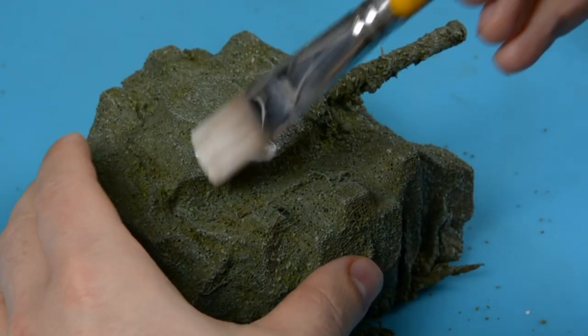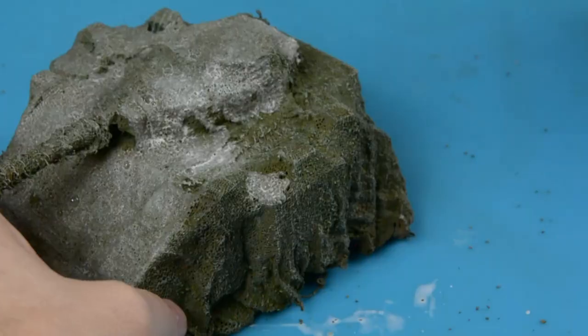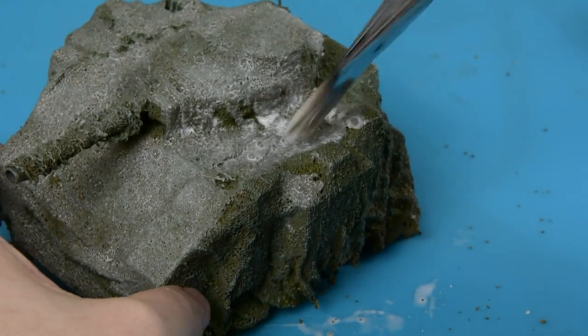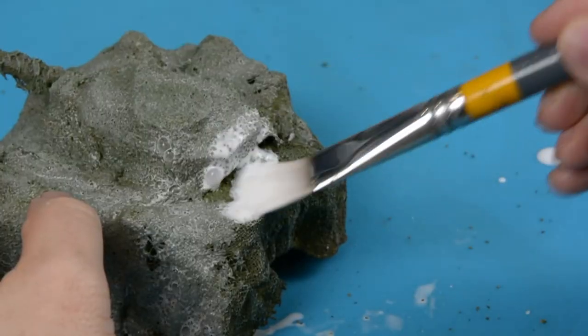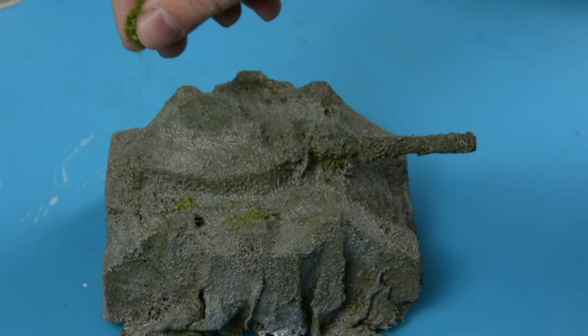I'll cover the entire tank with diluted PVA glue, so I once again can sprinkle some leaves on it. This time I'll try to place some more randomly.